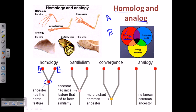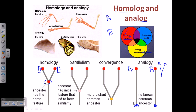On the other hand, analogy means similarity in function but it may differ in origin. Homology means similarity in origin, but analogy means similarity in function. For analogous structures, the common ancestor is totally different for both organisms — unlike homology, which diverges from a single point. Homology is divergent evolution — from a point it diverges — but for analogy it is a parallel kind, where we cannot find a single common ancestor from which both organism A and B are generated.